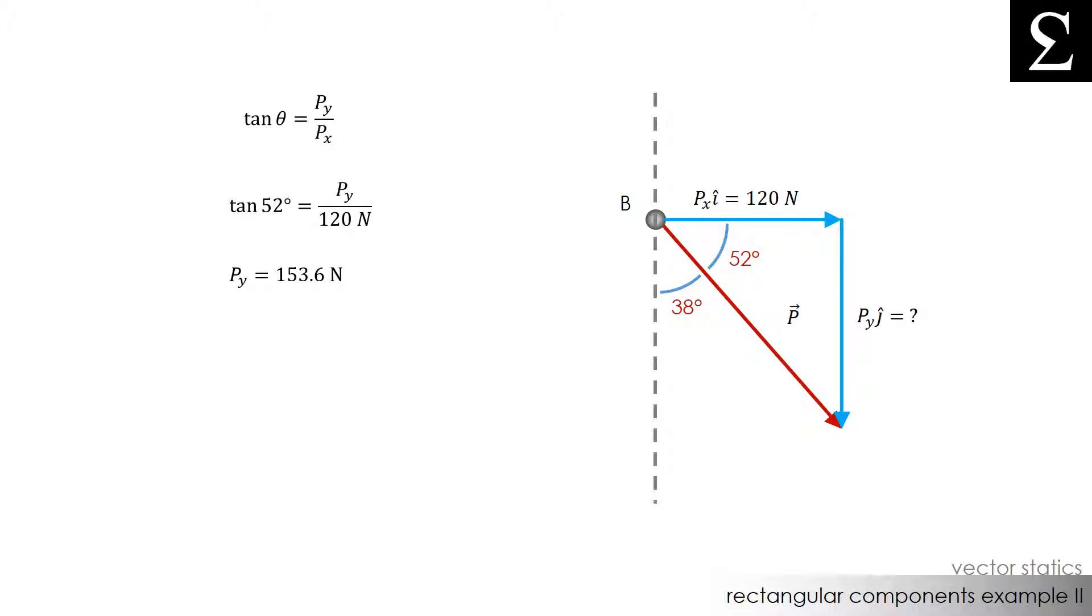Awesome! We know the magnitude of Py and we also know the directions of Px and Py. Px is directed along the positive x axis and Py is directed along the negative y axis. That means the force P is equal to Pxi plus Pyj, which is really 120 N in the i direction and 153.6 N in the negative j direction.